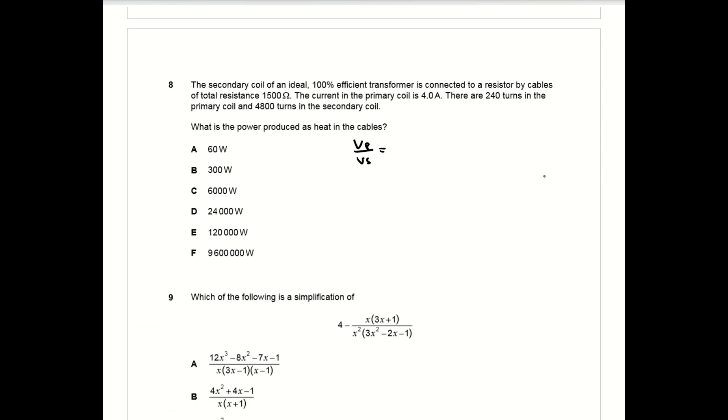For this question, whenever you're trying to work out power produced as heat in the cables you're always looking to calculate the value of i squared r. You can start off with the two relationships: VP over VS equals NP over NS and conservation of power VP IP equals VS IS to work out the current in the secondary coil, which is 0.2 amps. You then square this current and multiply by the secondary resistance 1500 ohms to give you a value of 60 watts for the power.